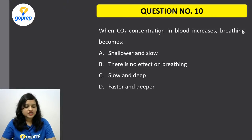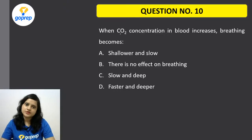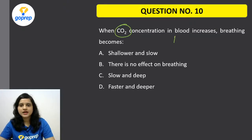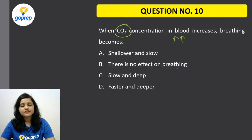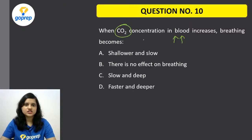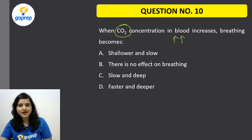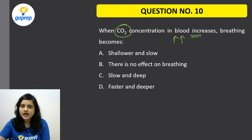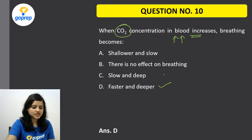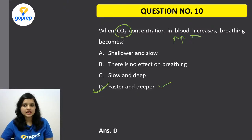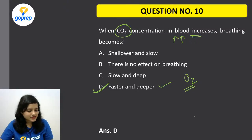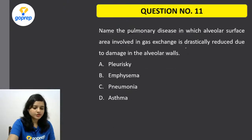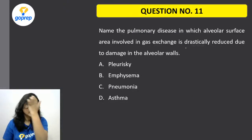When CO2 concentration in blood increases, breathing becomes — shallow and slow, no effect, slow and deep, or faster and deeper? Remember, if CO2 concentration in blood increases, there is a need for more deeper and faster breathing. So the correct option D is — faster and deeper — to get more oxygen into our blood.